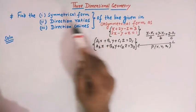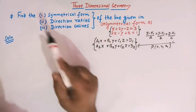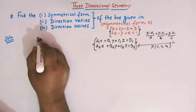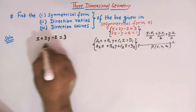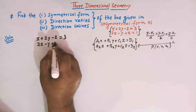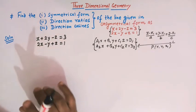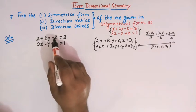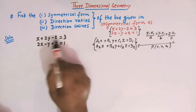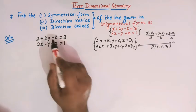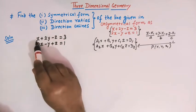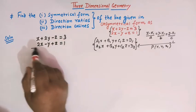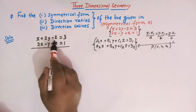When converting the unsymmetrical form to symmetrical form, we first consider the two equations: x + 2y − z = 3 and 2x − y + z = 1. In the first step, we solve these two equations and eliminate one of the variables — either x, y, or z. We select z here because the first equation has minus z and the second has plus z, so we can easily add them to eliminate z.